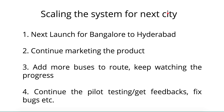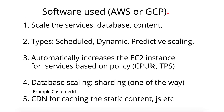Now let's look at the more technical aspects of scaling. We need to scale all areas — the services, the database, and the content. When putting this application on AWS or GCP, there are three ways to do service scaling: scheduled scaling, dynamic scaling, and predictive scaling.